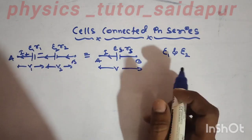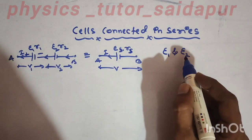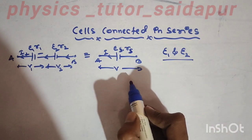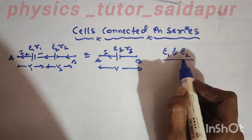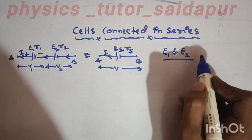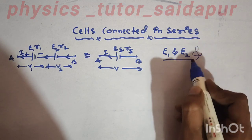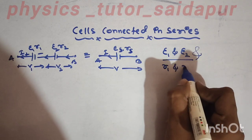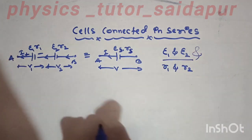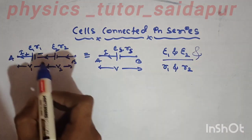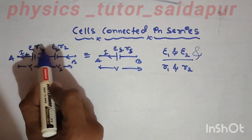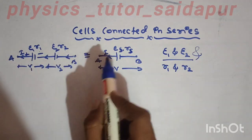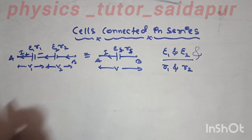Here we consider the combination of two cells with EMF E1 and E2, and internal resistance R1 and R2, connected in series.